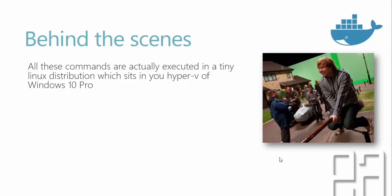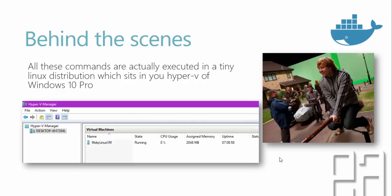You should have Hyper-V enabled on your machine. The reason is because this Linux distribution is actually sitting in the Hyper-V. It also automatically enables the virtual switch and internet connectivity with your network so that it can get the containers from the internet and deploy them into your Hyper-V machine. In your Hyper-V, it will be listed as a MobyLinux VM. That's what it is.